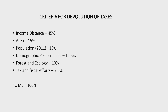Forest and ecology: this criterion has been arrived at by calculating the share of the dense forest of each state in the total dense forest of all the states. Tax and fiscal efforts: this criterion has been used to reward states with higher tax collection efficiency, measured as the ratio of the average per capita own tax revenue and the average per capita state GDP during 2016-17 to 2018-19. Overall, income distance accounts for 45%, area 15%, population (2011 census) 15%, demographic performance 12.5%, forest and ecology 10%, and tax and fiscal efforts 2.5%.